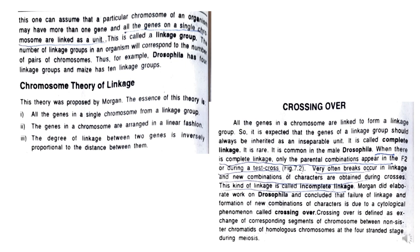Crossing over results in recombination of genes. All the genes in a chromosome are linked to form a linkage group when crossing over does not happen, and it is expected that genes of a linkage group should always be inherited as an inseparable unit. When this happens, it is called complete linkage, which is very rare and is common in male Drosophila. When there is complete linkage, only the parental combinations appear, as observed in the test cross in figure 7.2.